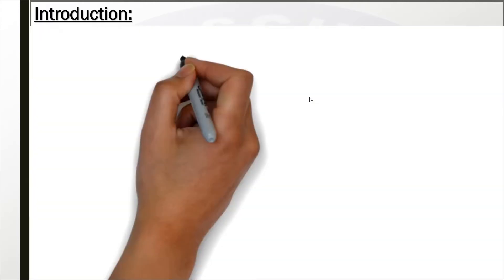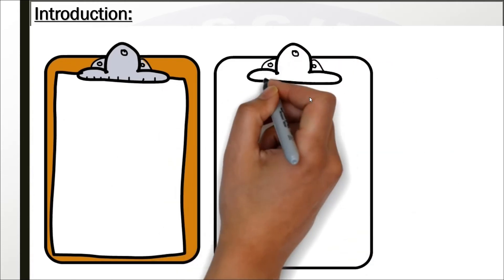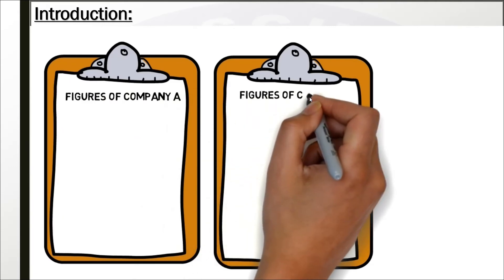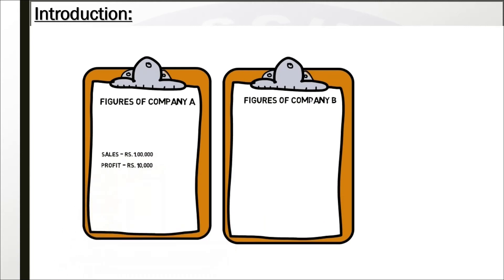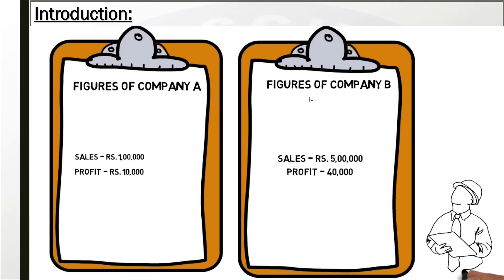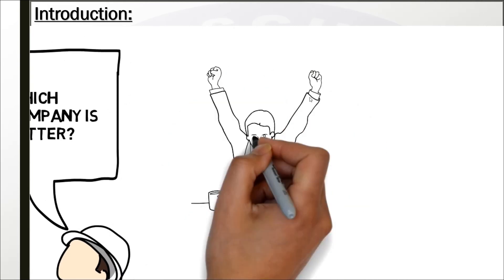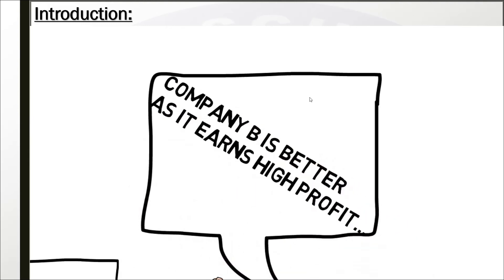Let me explain through an example. Two companies prepared their financial statements. Company A has sales of 1 lakh and profit of 10,000 rupees. Company B has sales of 5 lakh and profit of 40,000 rupees. If someone asks which company is better, a layman would quickly say Company B is better because it is earning a higher profit of 40,000 compared to Company A's 10,000.